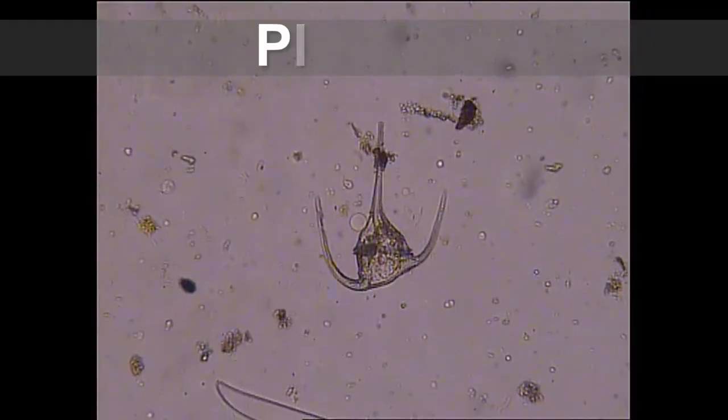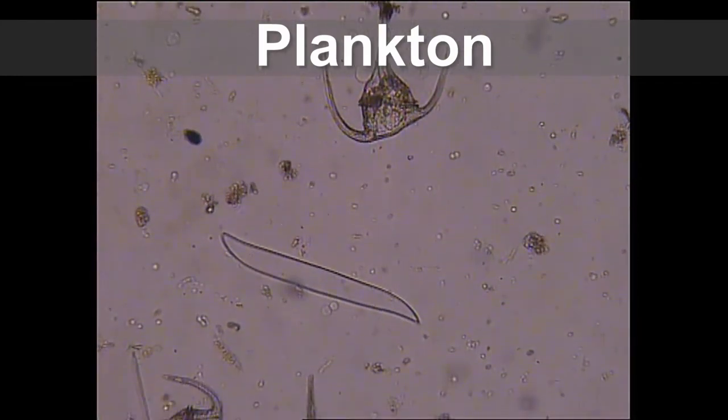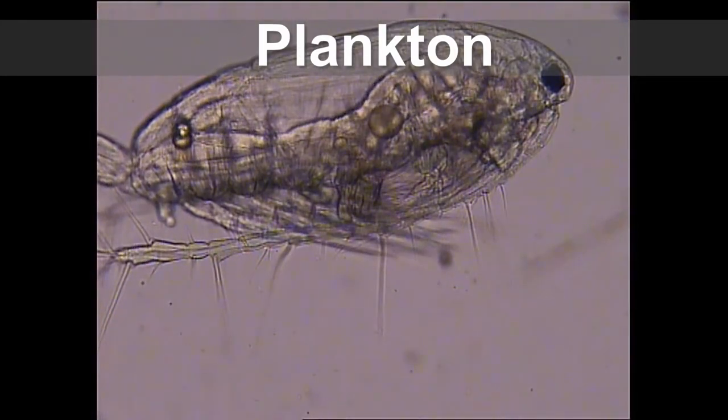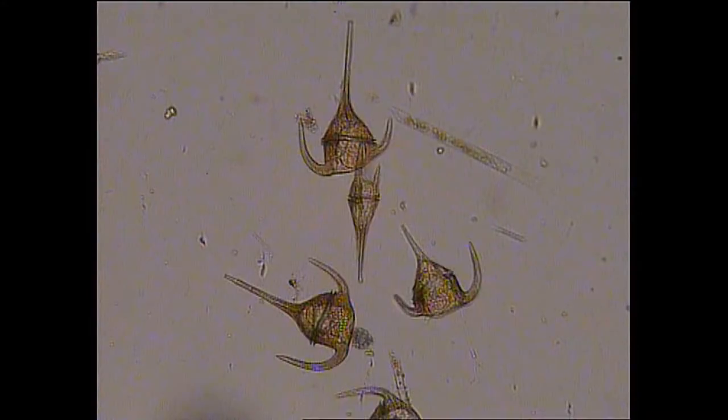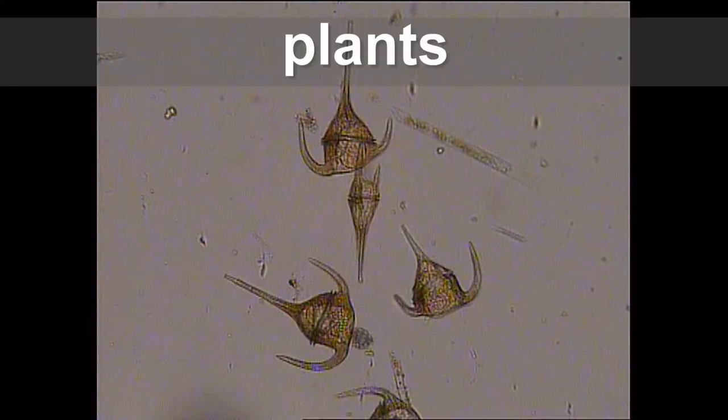They are called plankton. Plankton is from the Greek language and means to float or wander. There are two main groups of plankton, plants and animals.